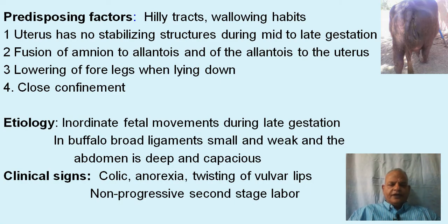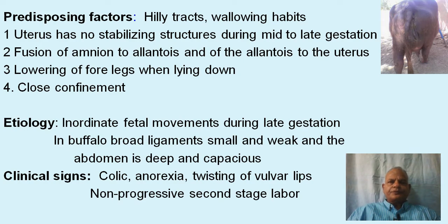The etiology of uterine torsion is complex and not clearly known, but inordinate fetal movements during late gestation in buffalo and cattle is considered the common etiology. In the buffalo, the broad ligaments which hold the uterus are small and weak, and the abdomen is deep and capacious — probably one reason for the higher incidence of uterine torsion in buffalos. Some studies also mention a reduction in amniotic fluid during terminal gestation in buffalo, which predisposes them to uterine torsion.